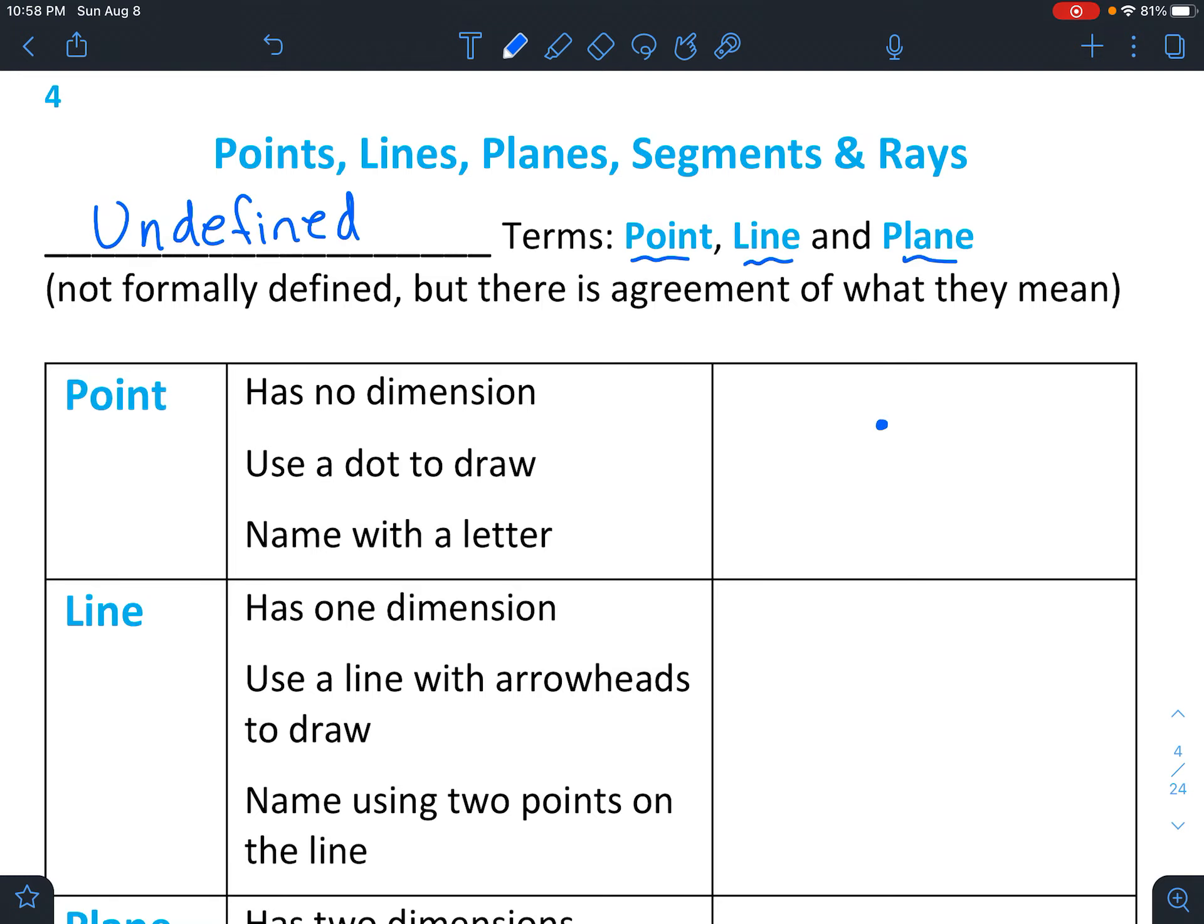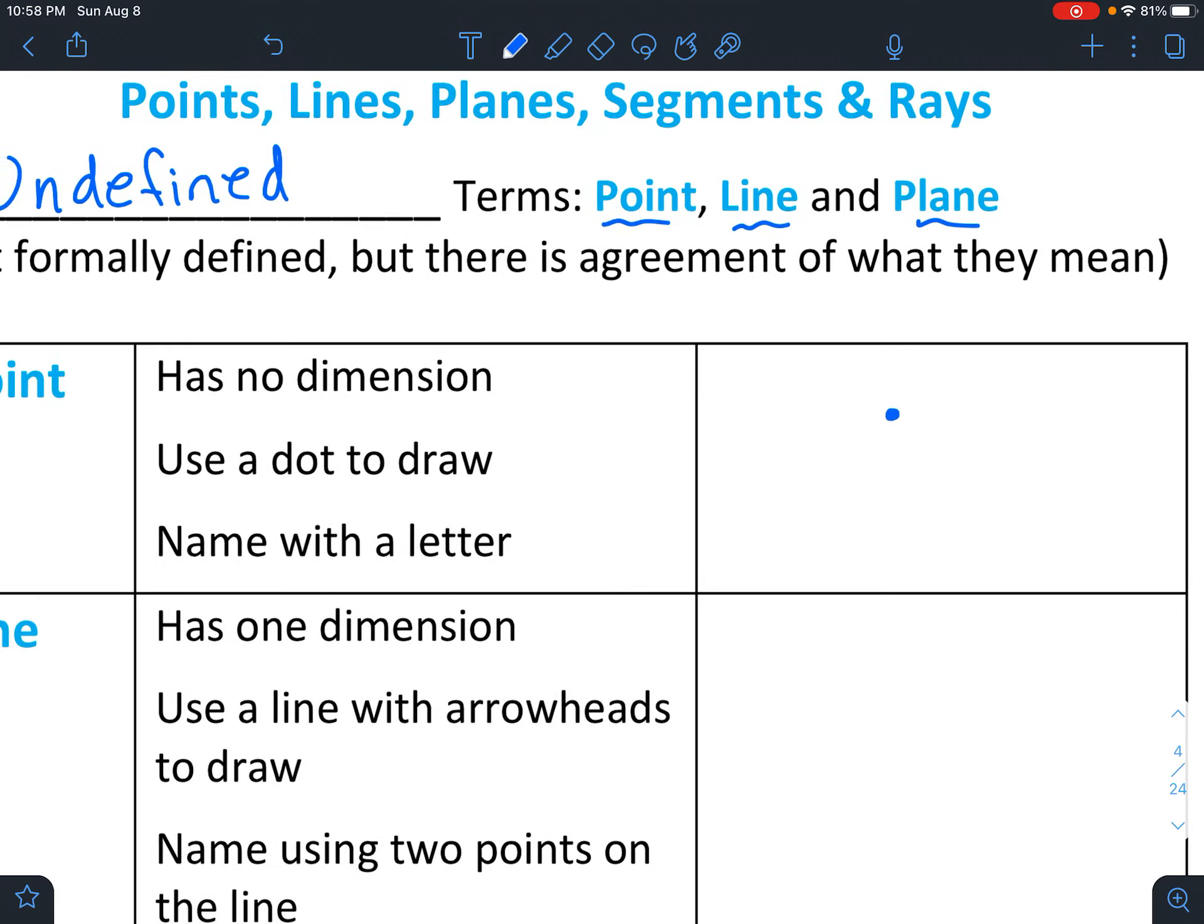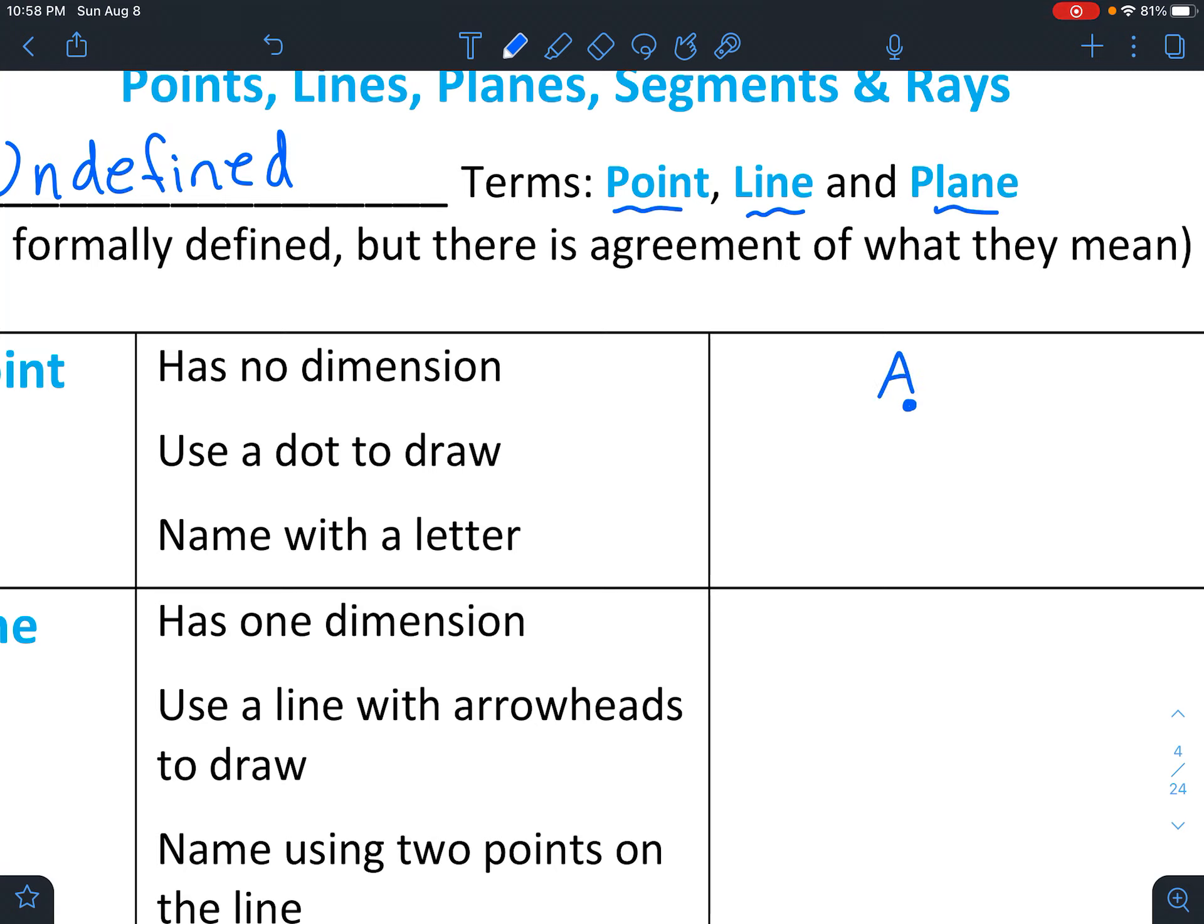So point is essentially just a dot. Even though it technically takes up space on the page, it really has no dimension. You use just a little dot to draw it, and you name it with a letter. You might name it as letter A. The way you'd write that if you're talking about it in a sentence, you'd say point A.